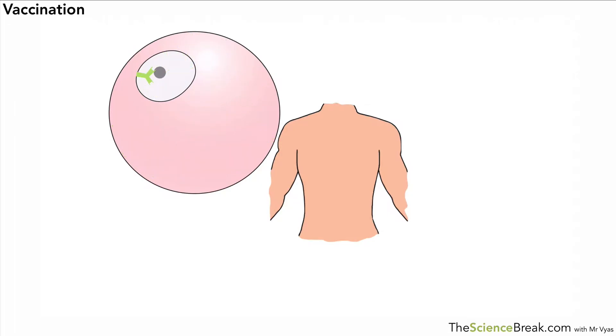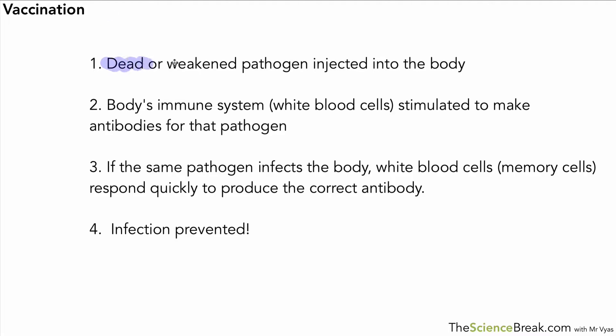The memory cells will stay around for a very long time and if the pathogen comes back again the body is better at fighting it off through production of those antibodies. So we can do a little summary there. Four points. The dead or weakened pathogen is injected into the body. The body's immune system, namely the white blood cells, are stimulated to make antibodies for that pathogen. If the same pathogen infects the body again the white blood cells respond quickly to produce the correct antibody and the infection is prevented. Important to note that it's quickly, the antibodies are made quickly and in large numbers and that's going to allow the infection to be prevented.